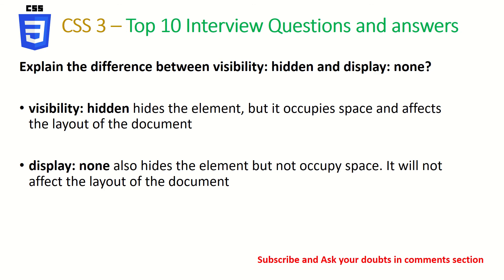This is an important question frequently asked to test your knowledge: what is the difference between display none and visibility hidden? Visibility hidden means the element is not displayed on the screen, but it still occupies space — the element is present but not visible. Whereas with display none, the element is treated as if it is not on the page at all — the space is not occupied and the layout is not affected. You can always move elements around using display none and display block.